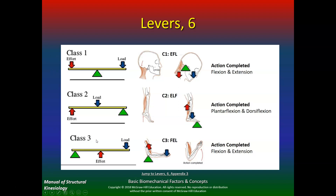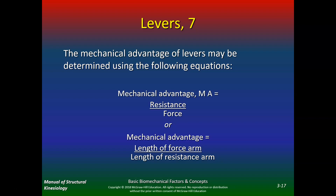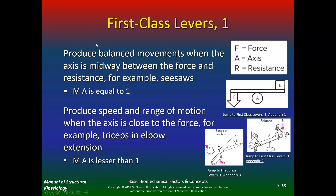The first and second class levers are not very efficient; the most efficient is the second class lever. To determine which lever is most efficient, we look at the mechanical advantage — remember the picture of the monkey and the elephant. The mechanical advantage of levers may be determined using the equation: MA equals resistance divided by force, or mechanical advantage equals length of force arm divided by length of resistance arm.